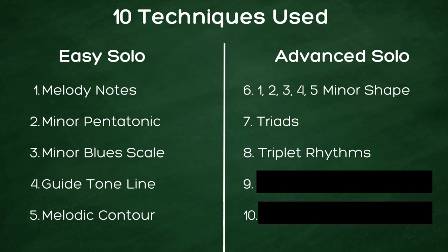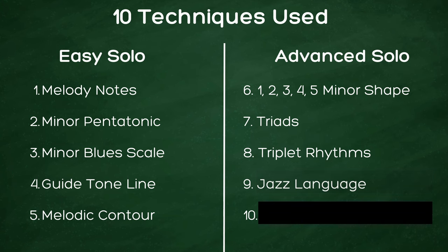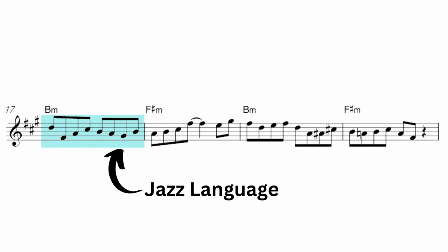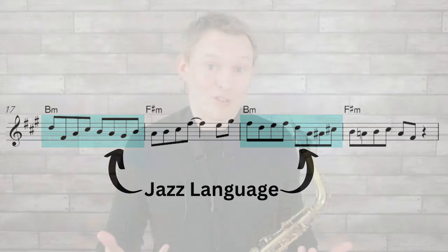As we go into the B section, what I was doing here was taking common pieces of language — jazz vocabulary, essentially — little licks and phrases that I know, and using them on these chords. So if you have any jazz vocabulary that you're learning at the moment, see if you can use some of that in your improvising over these chords.